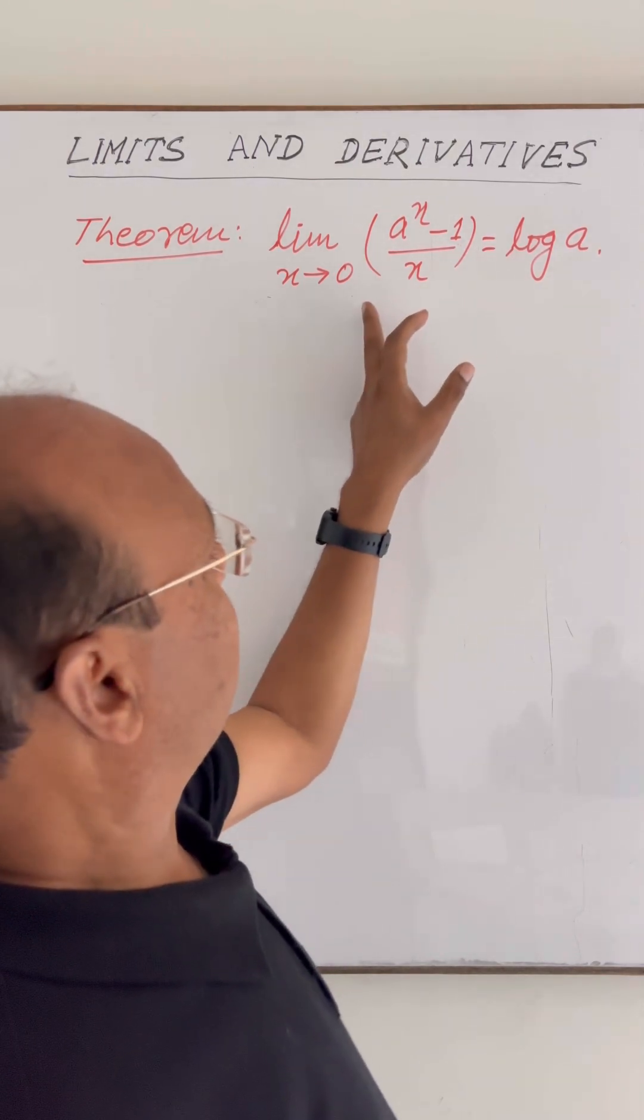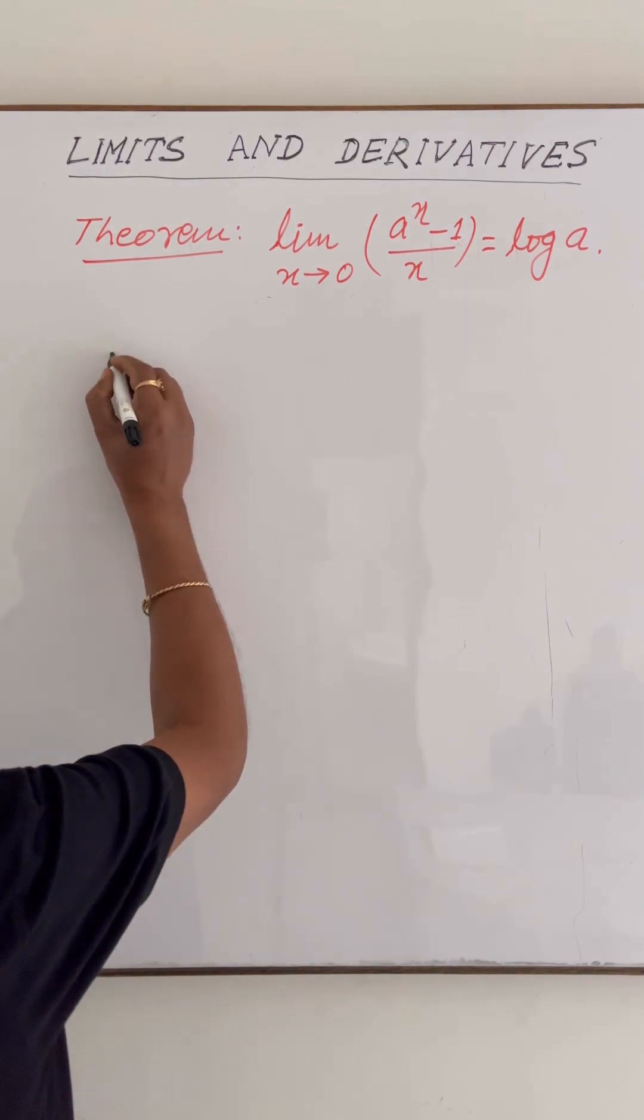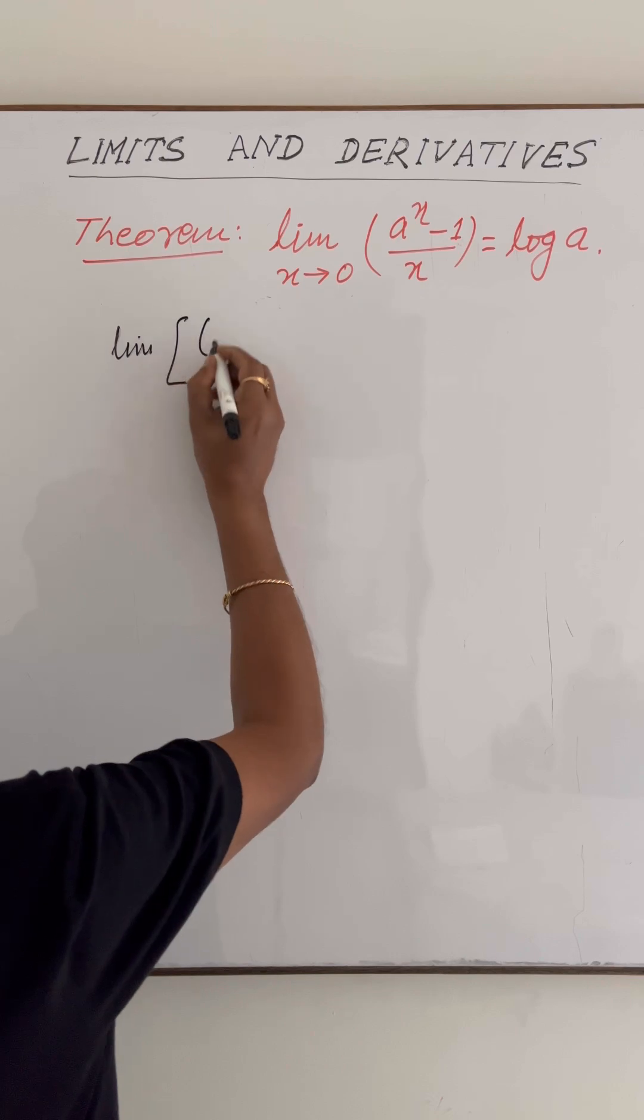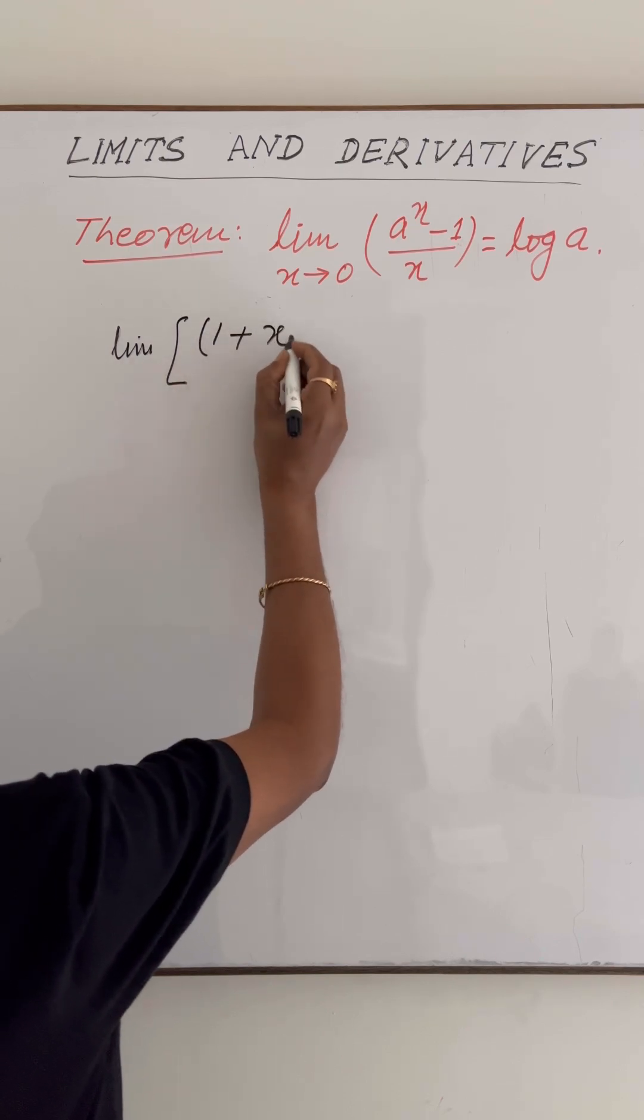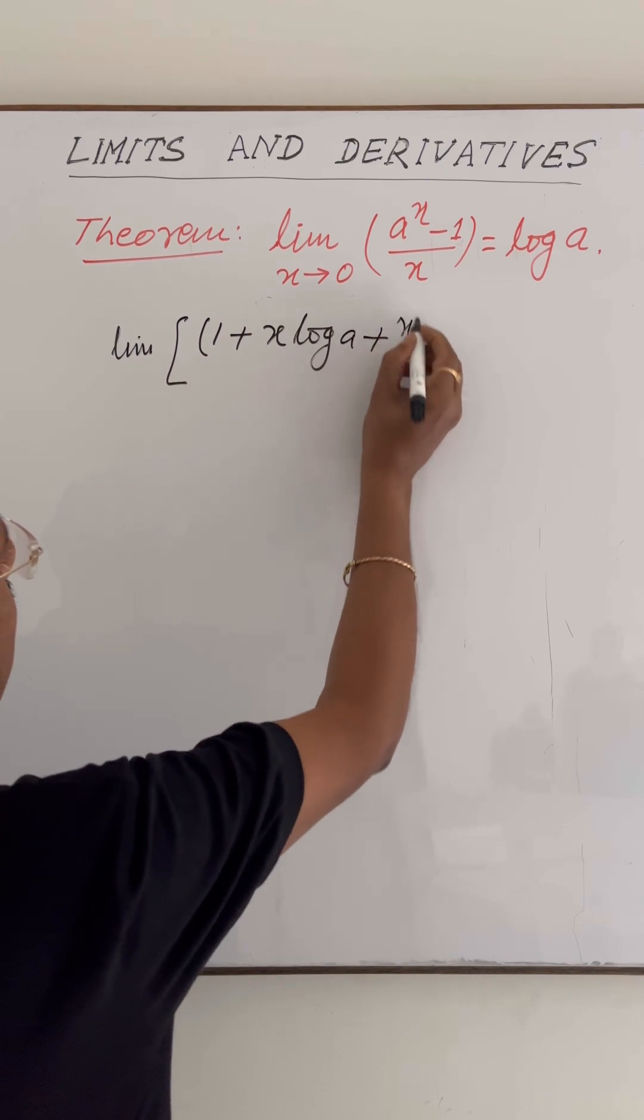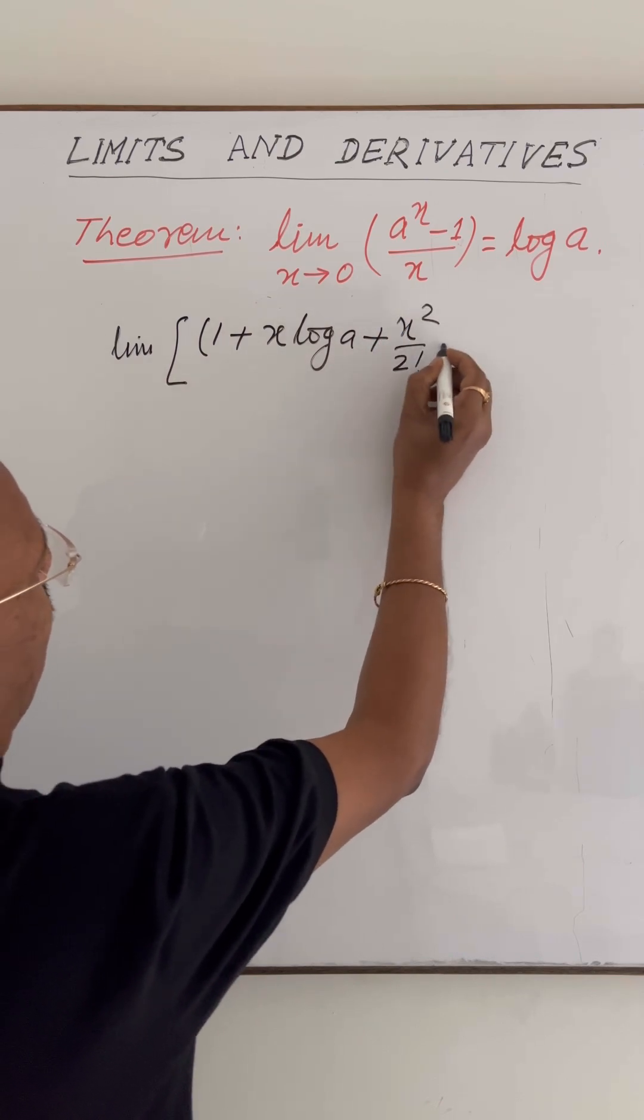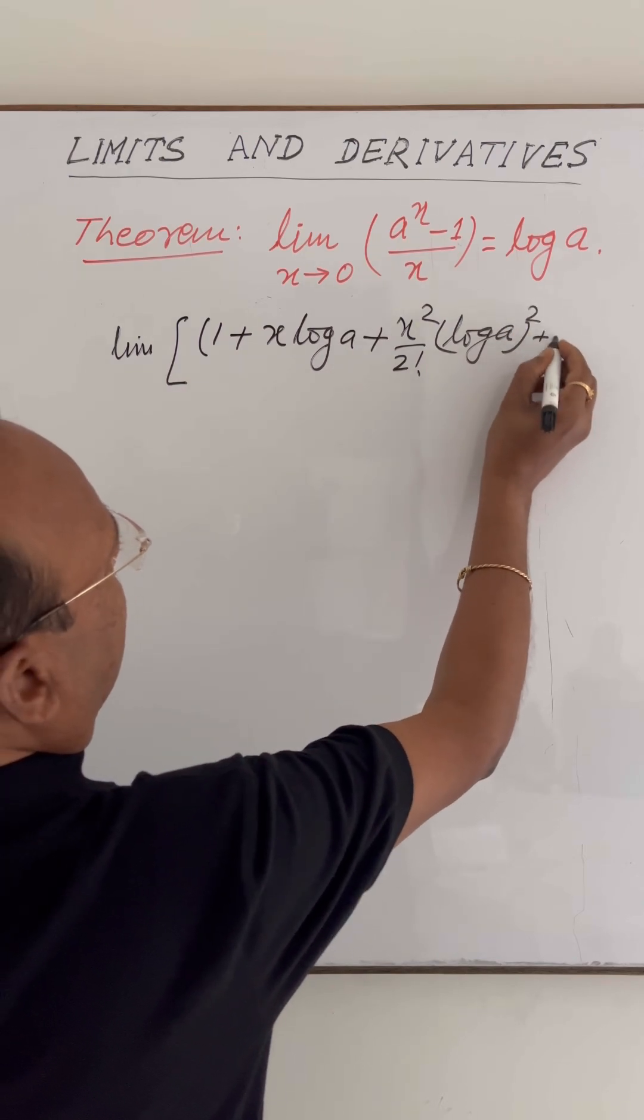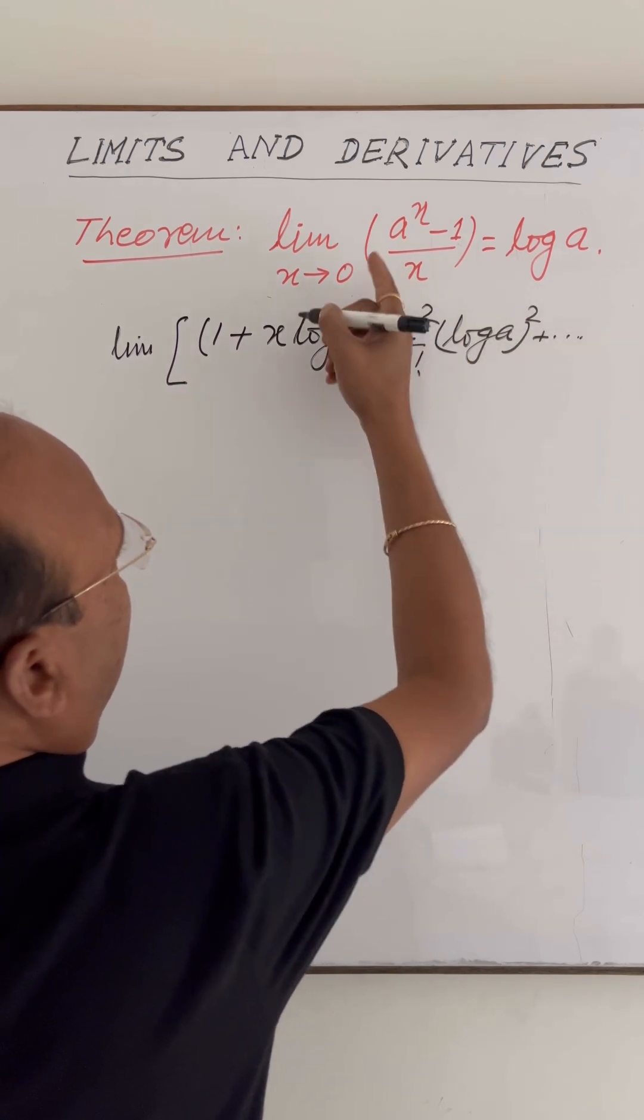The left hand side can be written as limit as x tends to 0 of [a^x is 1 plus x log a plus (x^2/2!) (log a)^2 and so on, and the last term is minus 1] divided by x.